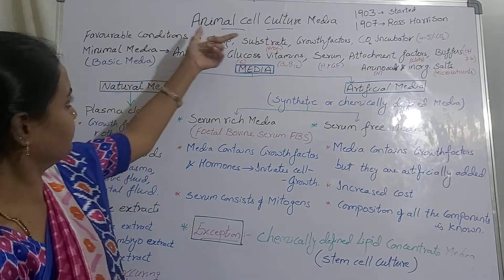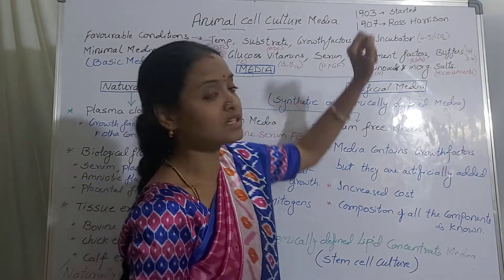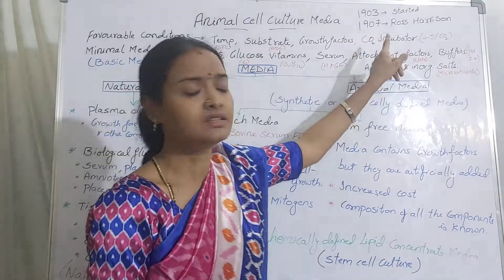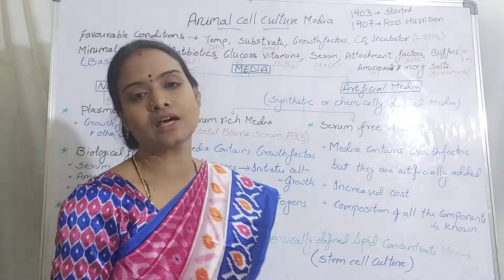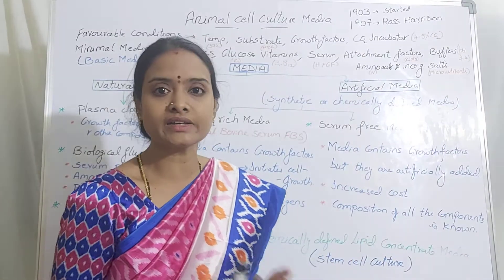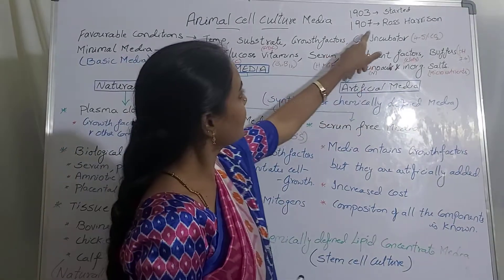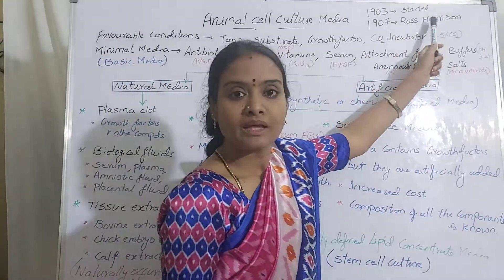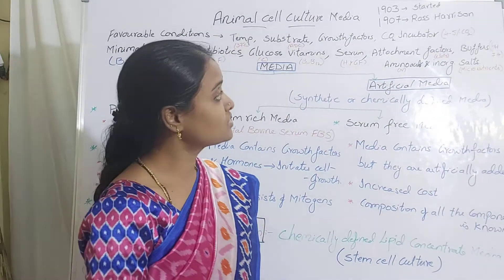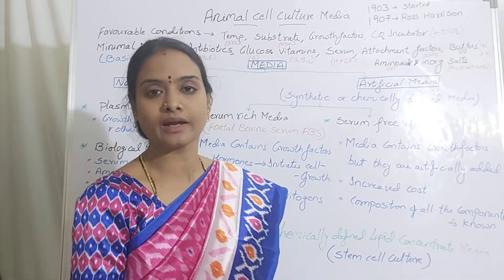Before going into the detail, animal cell culture was started first in 1903, where scientists began maintaining animal cells in vitro for the first time — outside the body, inside the lab. Then in 1907, Ross Harrison, the scientist, was successful in culturing the tissues of cold-blooded animals; frog cells were cultured and maintained.